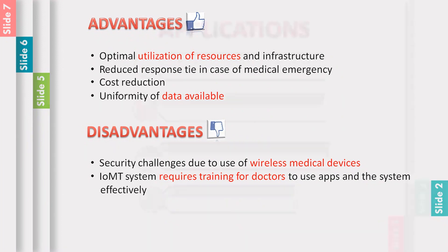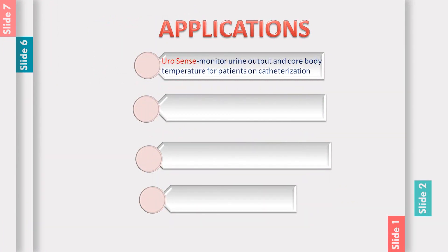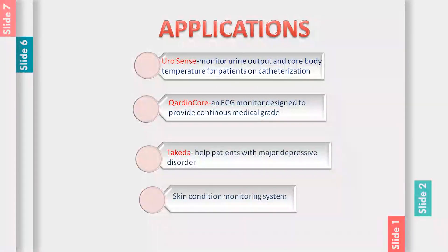Next are the applications of IOMT. The first is Urosense, which monitors urine output and body temperature of patients through catheterization. The second is QuadioCore, which has developed an ECG monitor designed to provide continuous medical-grade monitoring. The third is Takeda, which helps patients with major depressive disorder. The fourth is a skin condition monitoring system that links the entire system with connected objects and constantly tracks the patient's skin. There are also many more wide-ranging applications of IOMT.